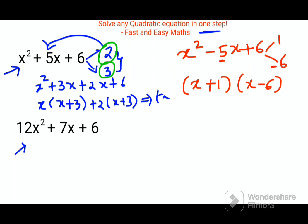Now, when I showed most of my students this kind of trick they got confused when the coefficient of x² is not 1, you have a number over here. What you have to do is just multiply this number with your constant. What number you're getting? You're getting 72.